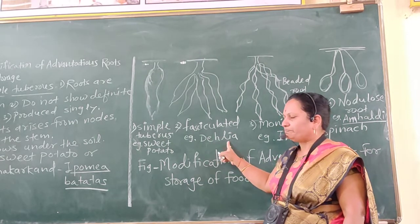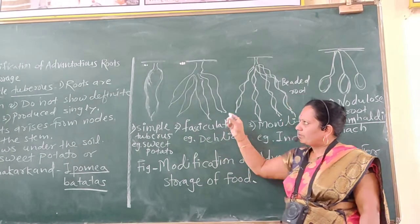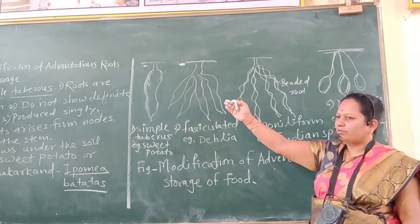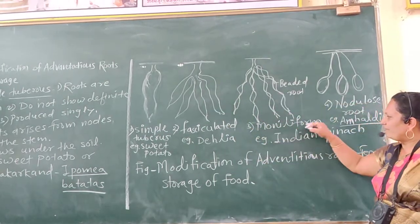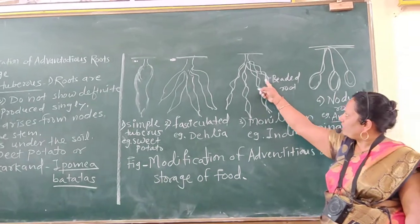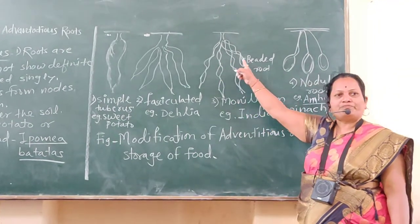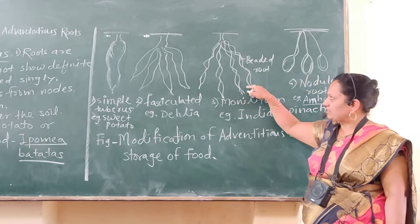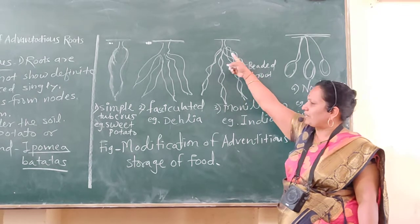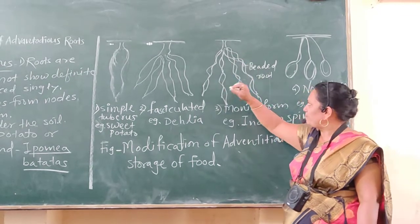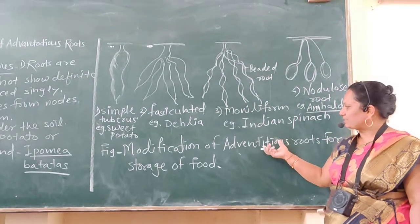Example: Dahlia. Third type of adventitious root for storage of food is called as moniliform root. Moniliform root consists of beaded form. Roots in beaded form arise from the basal part of the stem. And called as moniliform. Example: Indian spinach.